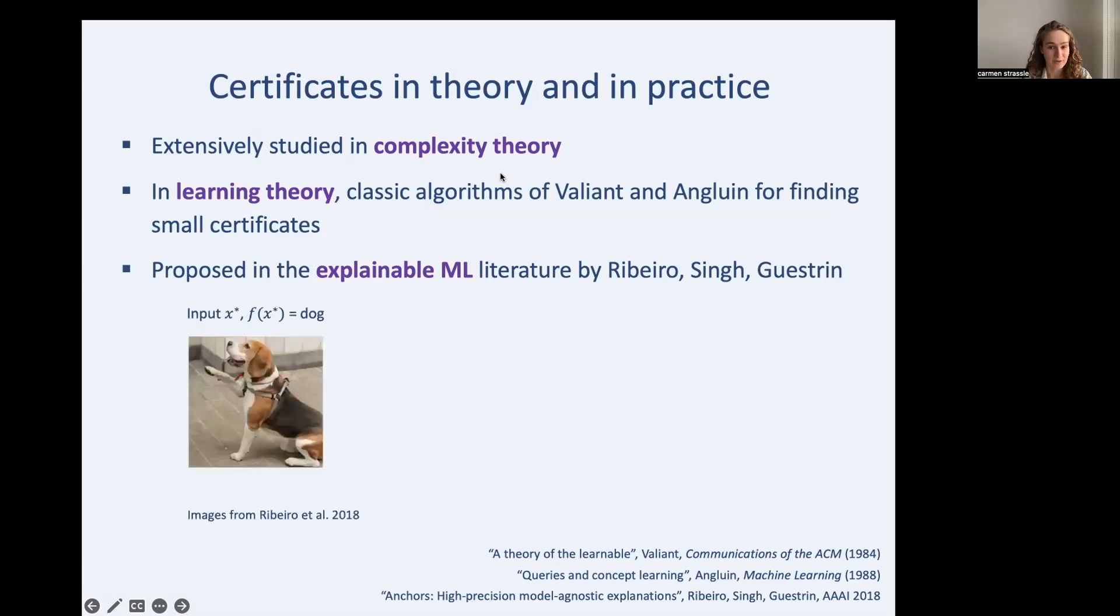Suppose you have an algorithm that decides whether an image is a dog. Here you can see our input x star is this picture of a dog and the function is spitting out yes, indeed, this is a dog. So here's a certificate S for f's value on x star. You can see it's just a subset of the input bits of x star, the input pixels in this case. And so you might imagine that this black box f doesn't care about the background. It only cares about the dog's head and a few other details, and that's enough to determine that yes, this is in fact a dog.